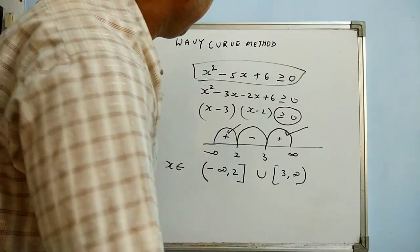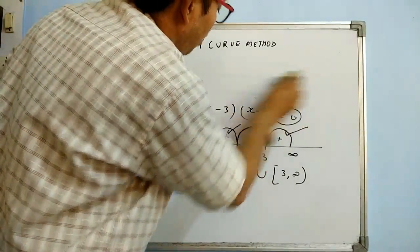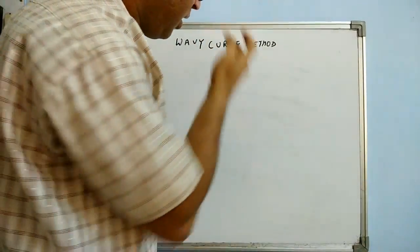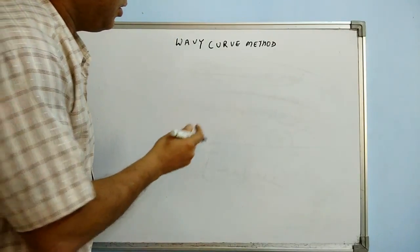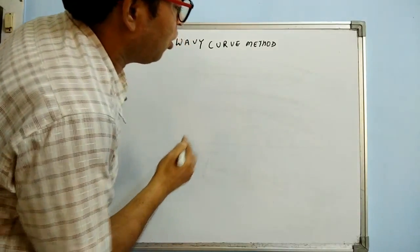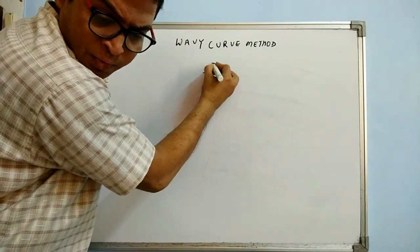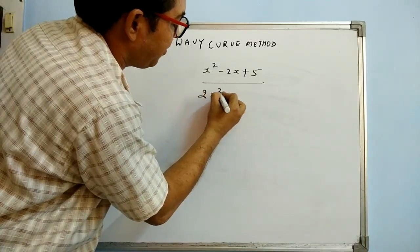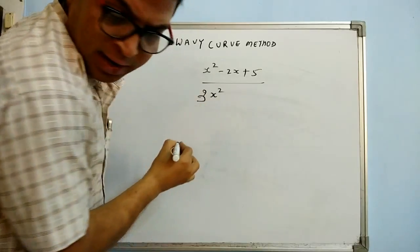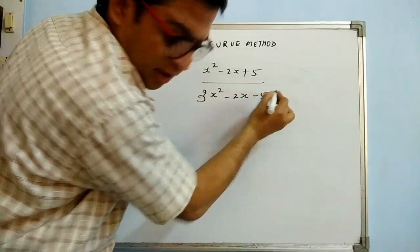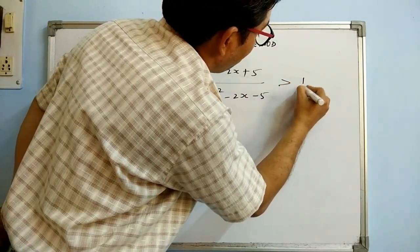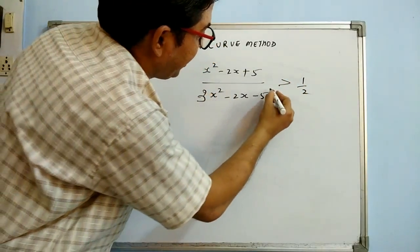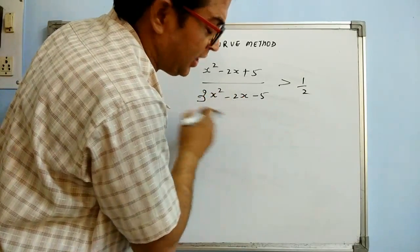This is a very basic wavy curve example. Now, what precautions do we take when solving wavy curve problems involving fractions? A key rule: never cross multiply. For example, if you have (x² - 2x + 5) / (2x²) ≥ 1/2, don't cross multiply, because 2x² is a variable. Cross multiplication is only valid if the quantity is a constant like 2, 3, or 4.